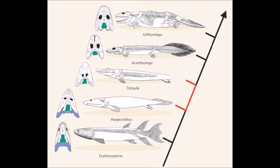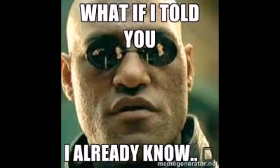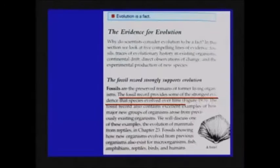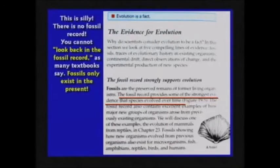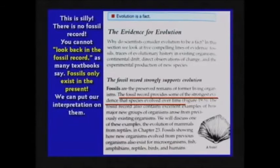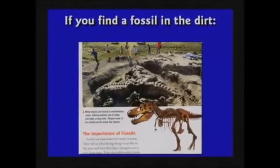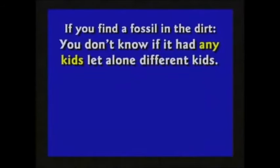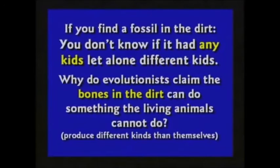Now I know how Kent would respond to this claim. In his own words: 'This guy says evolution is a fact and the best evidence for evolution is the fossils — that's silly. There's no fossil record. You look at fossils in the present; you put your interpretation on them. There is no fossil record. It's stupid to say that's evidence. If you find a bone in the dirt, all you know is it died. You can't prove it had any kids that lived, and you sure can't prove it had different kids. Why would you think a bone you found in the dirt can do something animals today cannot do — produce something other than their kind?'